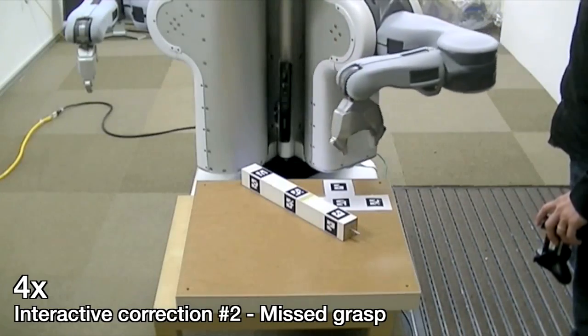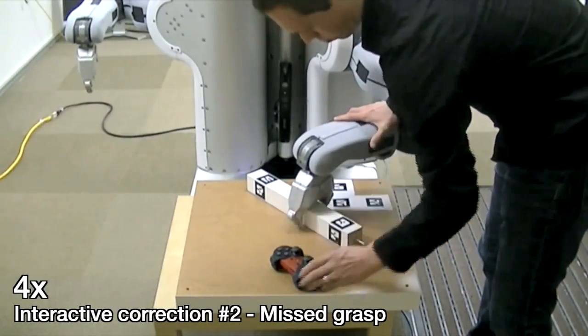Here, the robot misses a grasp, and the user provides another interactive correction, showing it how to retry the grasp.